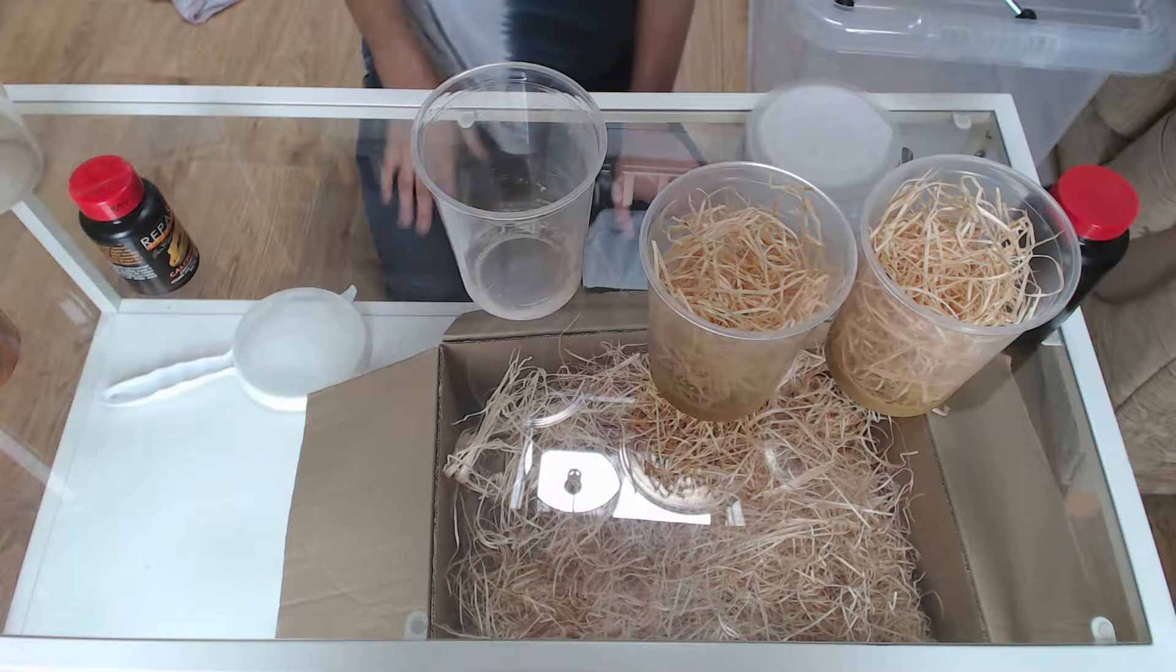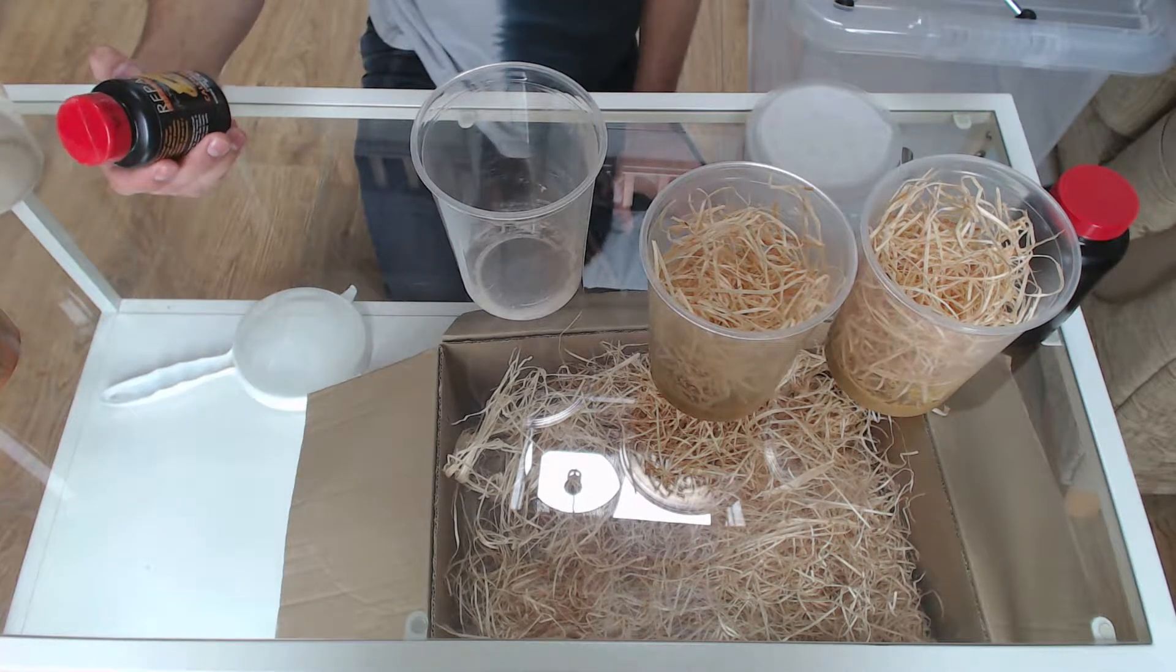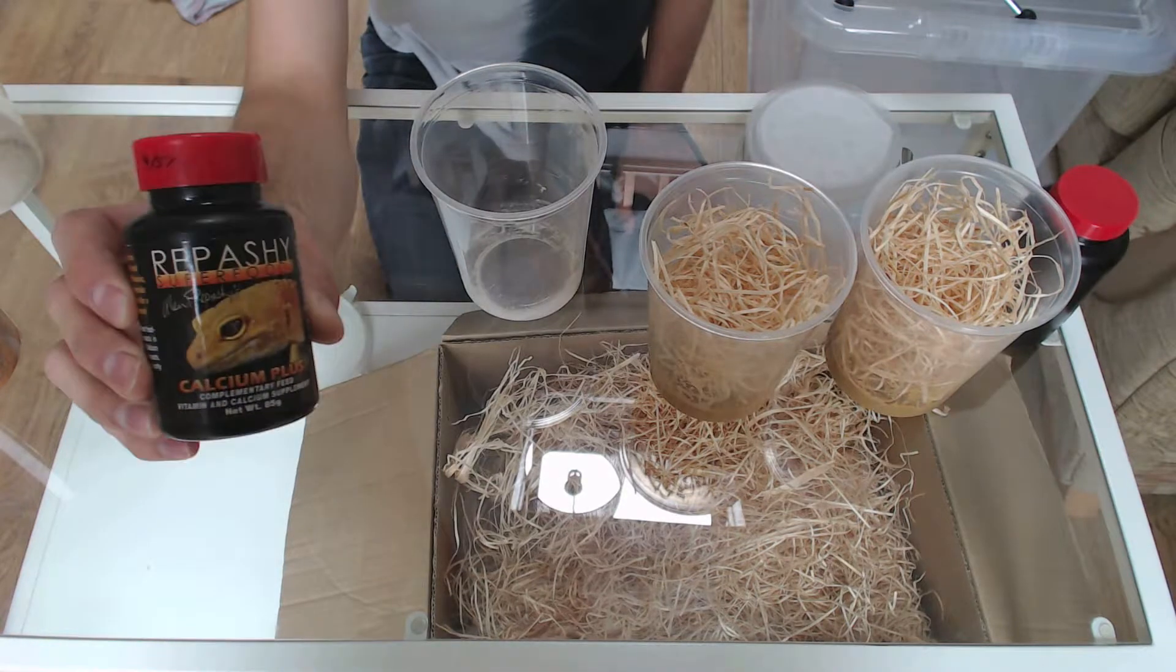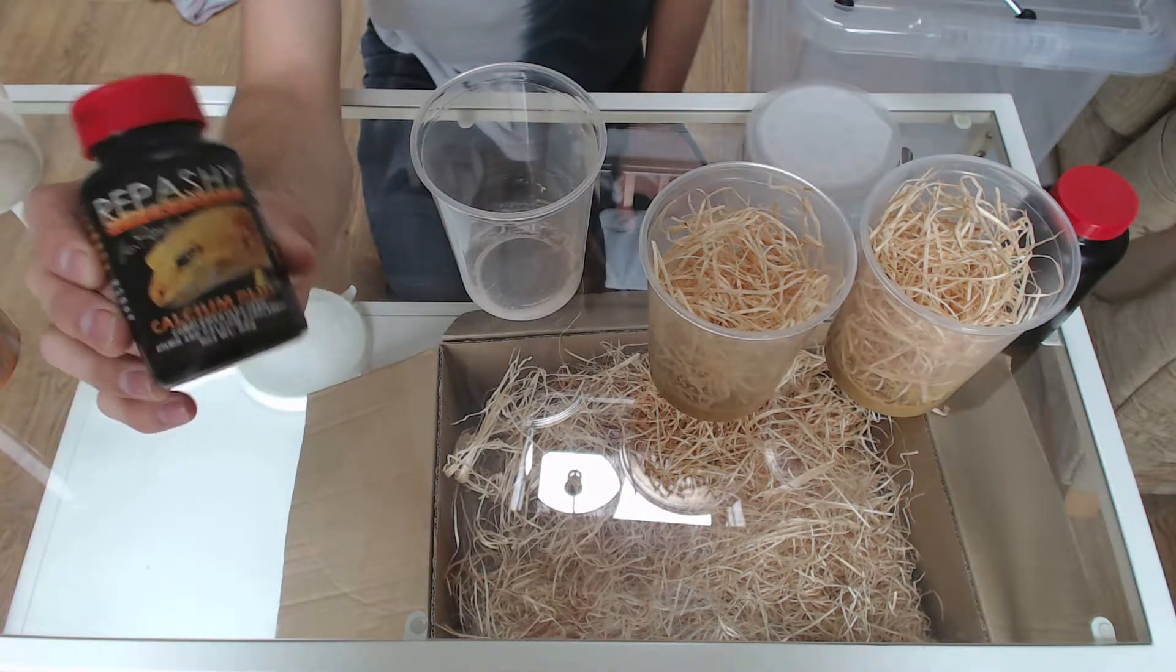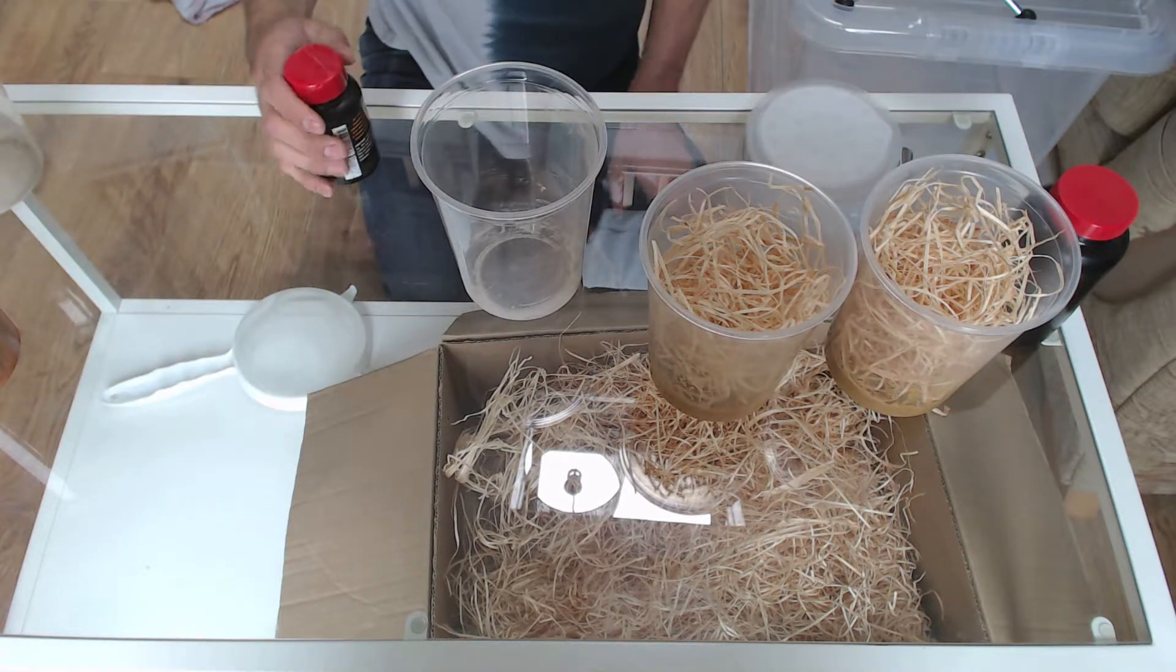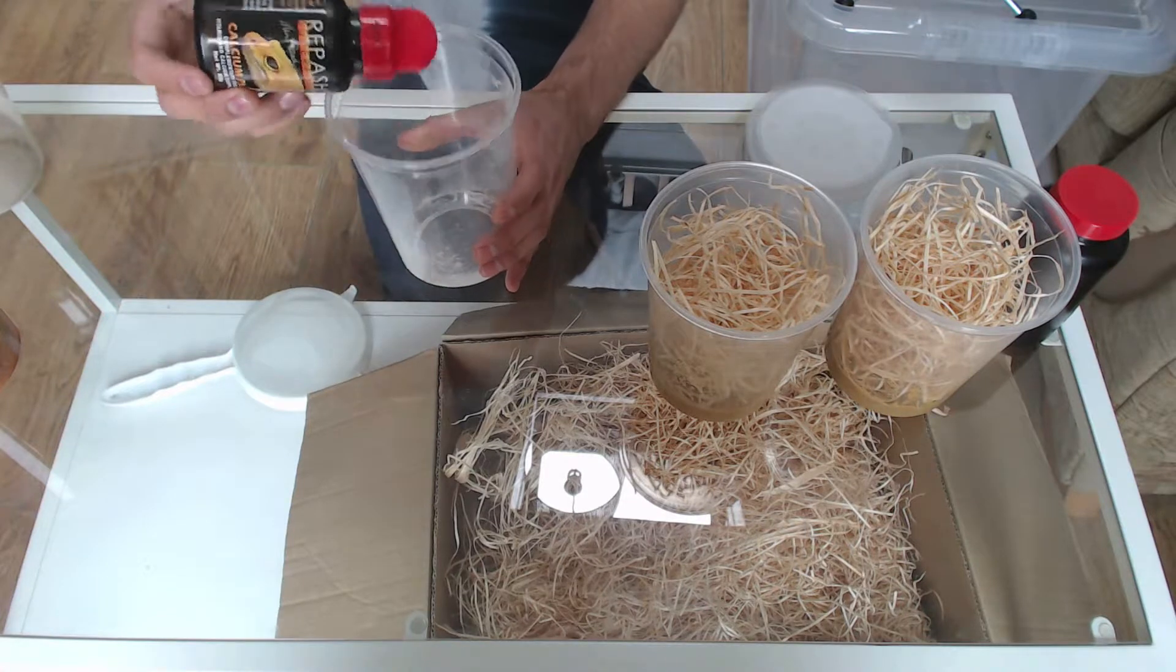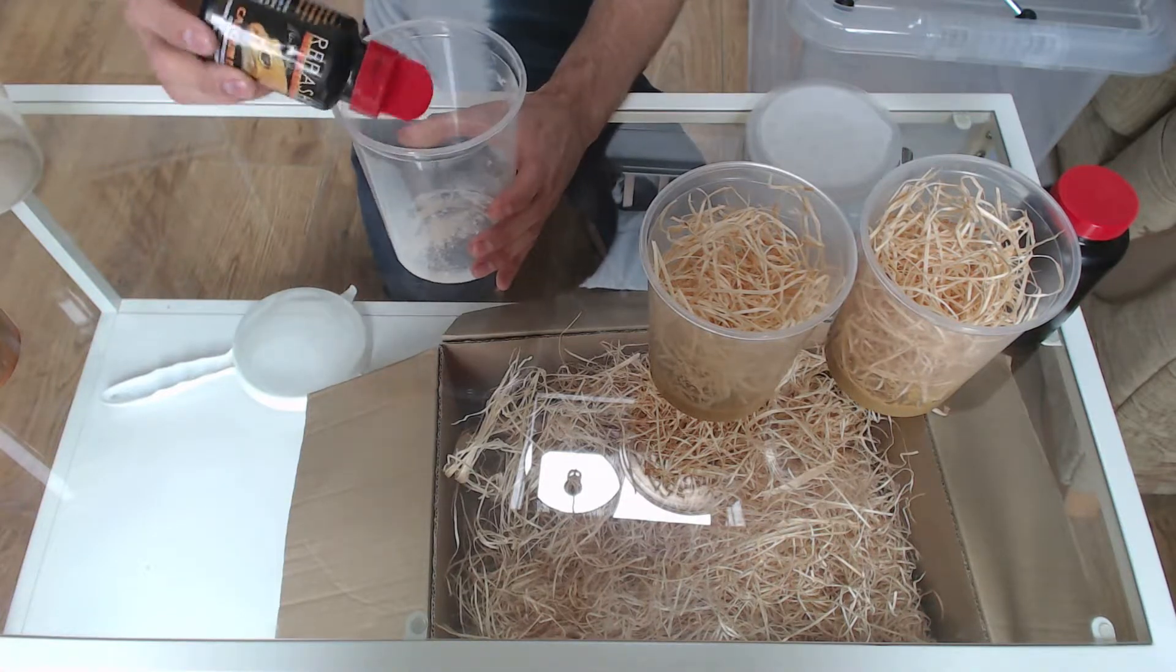What I do to reduce the risk of mites being transferred over into the new cultures is I grab my Rapashi Calcium Plus, which I use to dust my fruit flies to feed my dart frogs. So what we'll do is we'll tap a bit of that into the deli cup. Don't need too much.